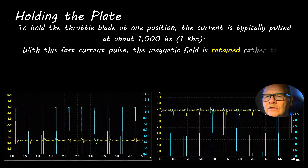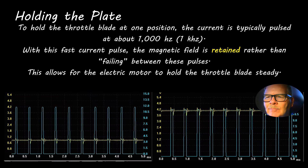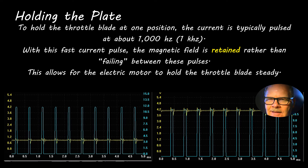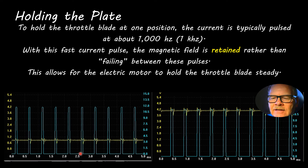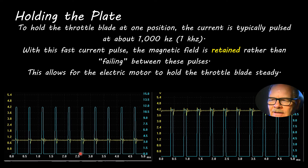When holding the throttle plate at one position, they pulse it at 1,000 times a second — one hertz is one pulse per second, 1,000 hertz is a kilohertz, a million times a second is a megahertz. This fast current pulse retains the magnetic field so the electric motor can hold the throttle plate steady wherever it needs to hold it. The duty cycle has everything to do with how far it opens.